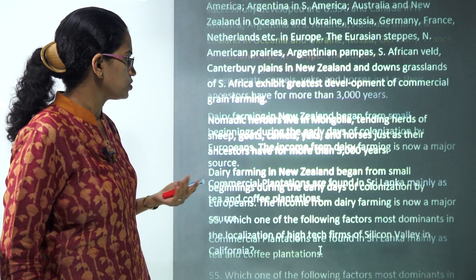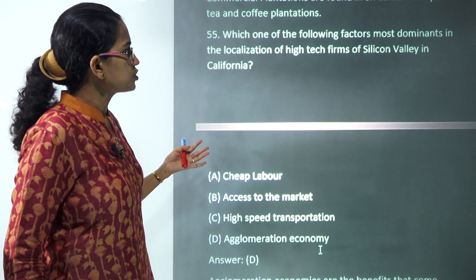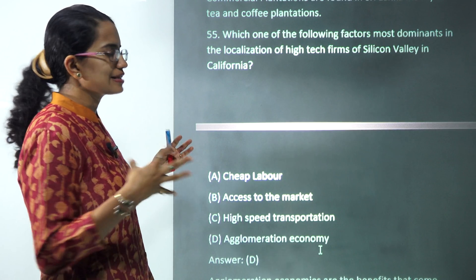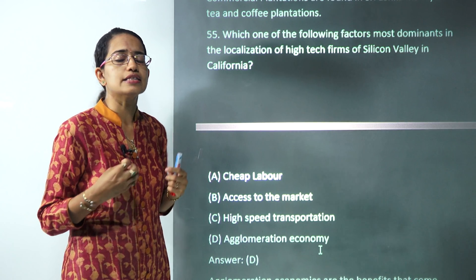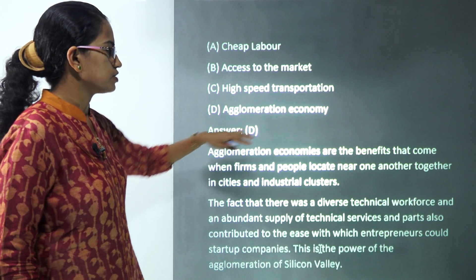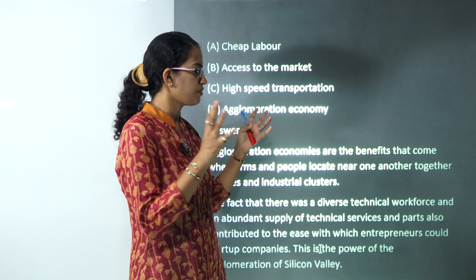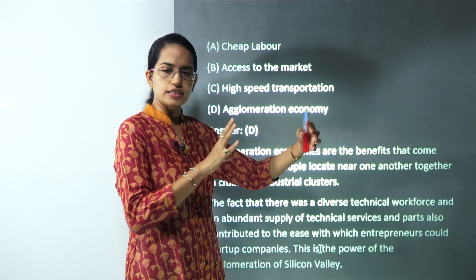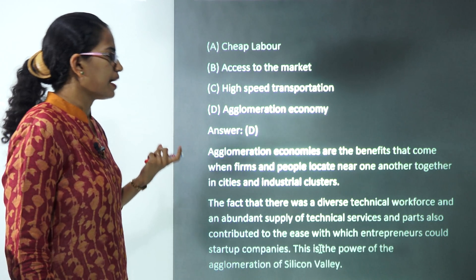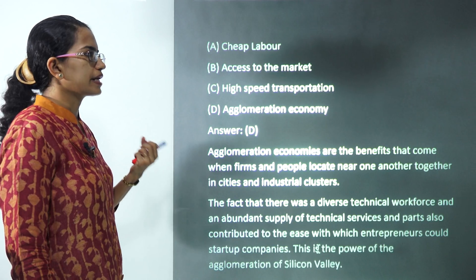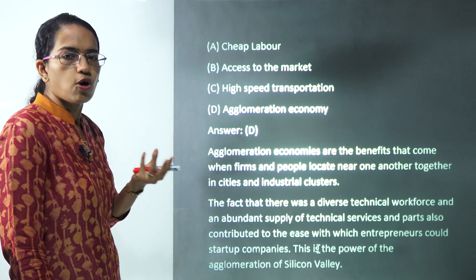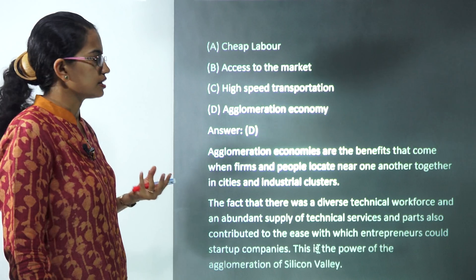The next question is about Silicon Valley. There is a localization of high-tech firms, and this is mainly due to agglomeration. Agglomeration brings various firms and industries together at one place to maximize efficiency in production. So agglomeration economy is the correct option here.